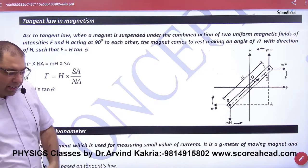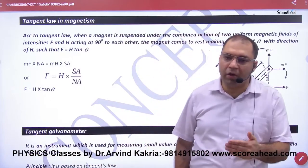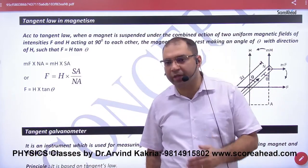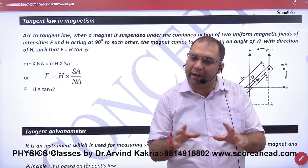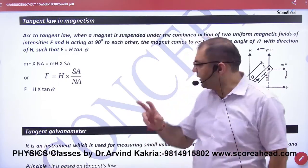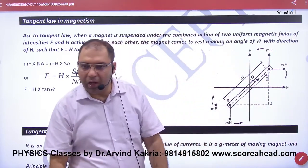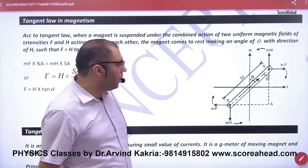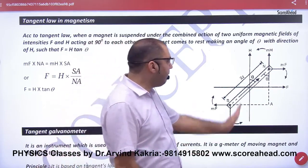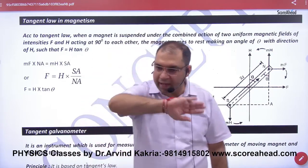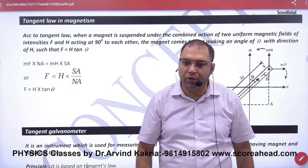What is Tangent Law in Magnetism? Suppose that you have a bar magnet — here is a bar magnet on a table. You have seen the horizontal field of Earth; you know that it is present everywhere. This magnet is not floating upright; it is lying flat. I will show you the top view and I will show you the horizontal field H.